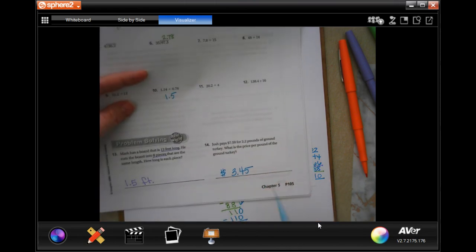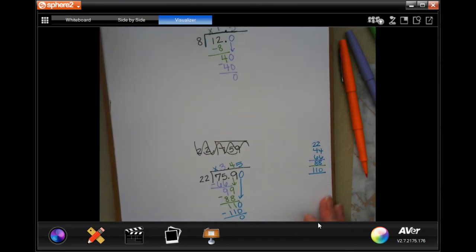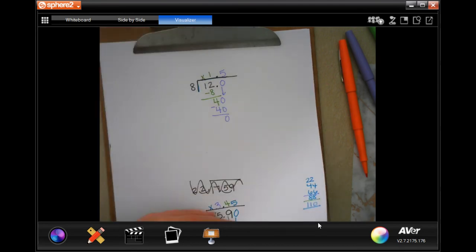Your answer for number 14 is going to be $3.45. Make sure you have the dollar sign. That's your label for that one. Write your work down, guys. It's important.